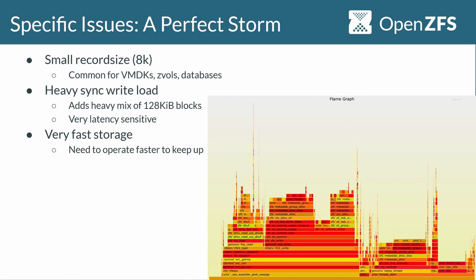The first factor is that we operate on a much smaller record size than normal. The default is 128 KB; our default is 8 KB, which is common for VMDKs, disk images, zvols, and databases that modify small amounts of data in random updates. Combined with compression, we end up with lots of blocks that are 2–3.5 KB — many very small blocks of many different sizes, which leads to fragmentation.